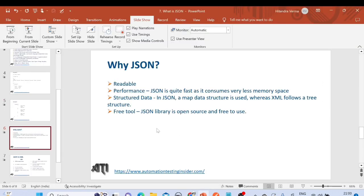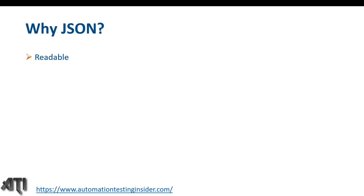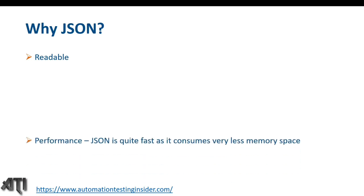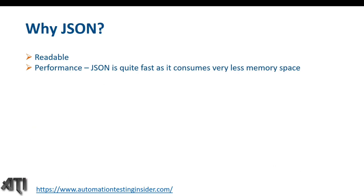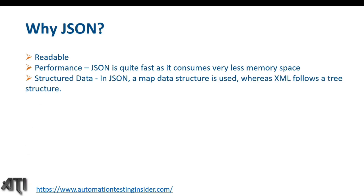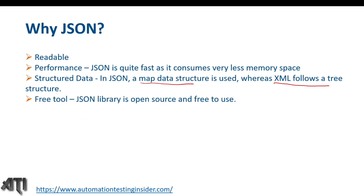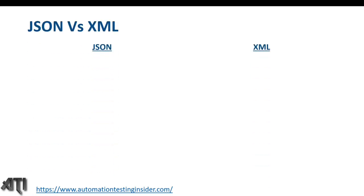Why is JSON required? JSON is readable and understandable. Performance-wise, JSON is quite fast as it consumes very little memory space. JSON uses a map data structure, whereas XML follows a tree structure. JSON libraries are open source and free to use. That's why we use JSON — it's very easy to understand and write.